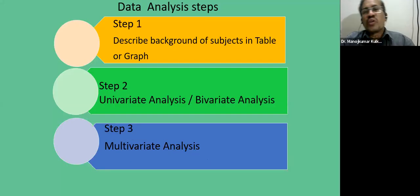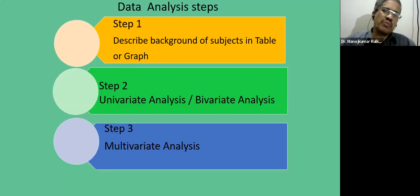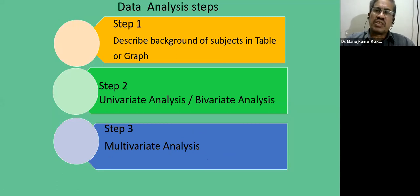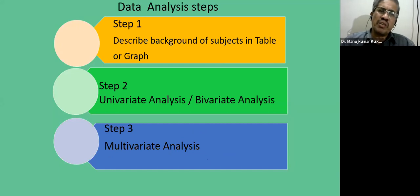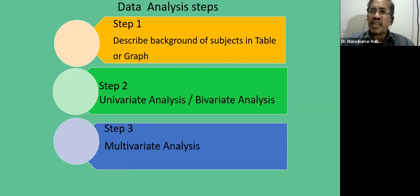As a first step in data analysis, describe the background of subjects in a table or graph — such as age, sex, educational qualification, marital status, and place of residence. For those background characteristics, represent your data in terms of tables and graphs. Then go for univariate analysis, where your outcome is compared with respect to only one independent variable.